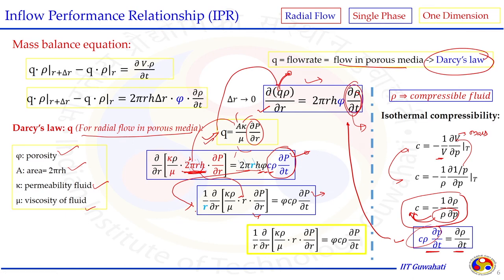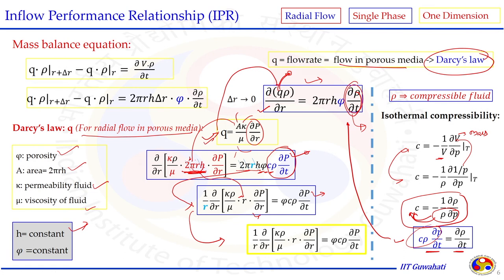After cancellation and rearrangement, we get the simplified form: (1/r)·∂/∂r[r·(k/μ)·∂p/∂r] = φ·C·∂p/∂t. This is the general IPR equation — not assuming any particular type of fluid or flow regime. It can be considered the basic IPR equation with assumptions that h is constant and φ is constant.